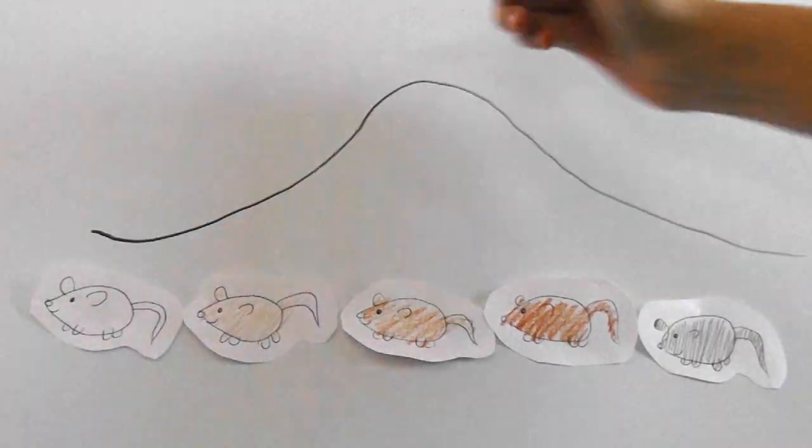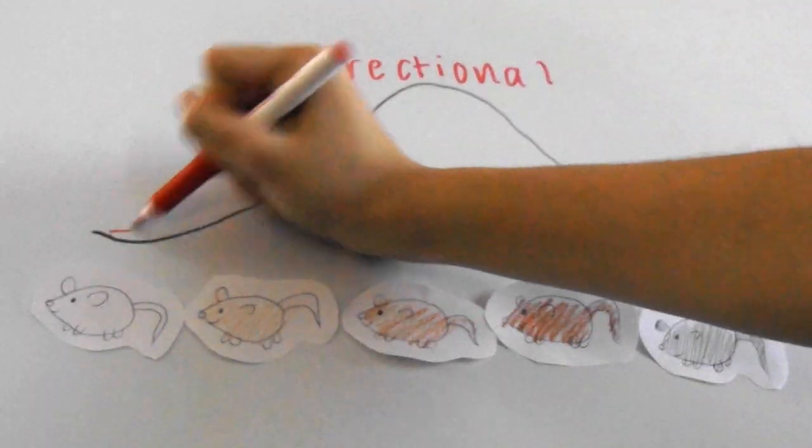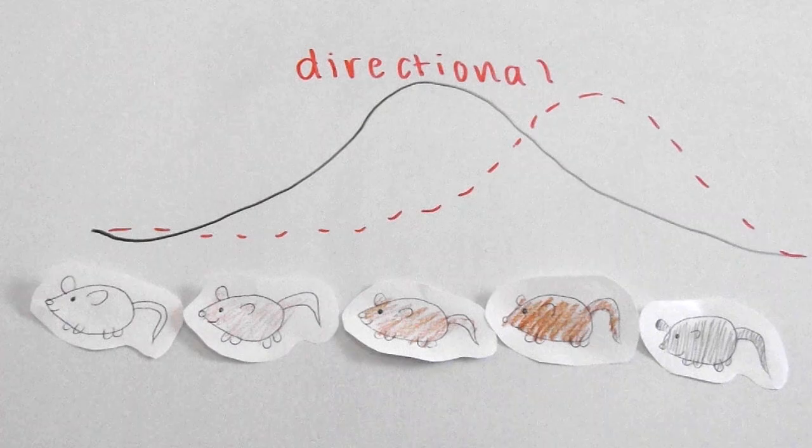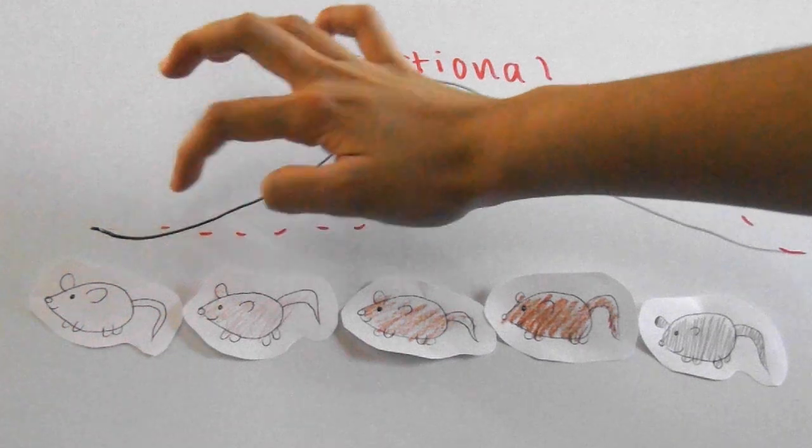Now natural selection can act on this population in many different ways. This first one is called directional selection, in which the whole curve shifts to one direction. That way, the whole population of mice either becomes lighter as a whole or darker.